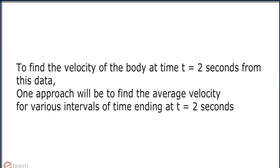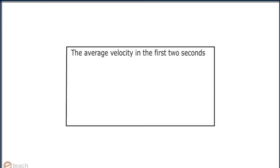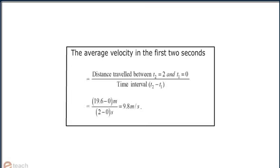To find the velocity of a body at time t equals 2 seconds from this data, one approach will be to find the average velocity for various intervals of time ending at t equals 2 seconds. The average velocity in the first 2 seconds is the distance travelled in the time interval t2 equals 2 and t1 equals 0, divided by t2 minus t1. That is equal to 19.6 minus 0 meters divided by 2 minus 0 seconds, which equals 9.8 meters per second.